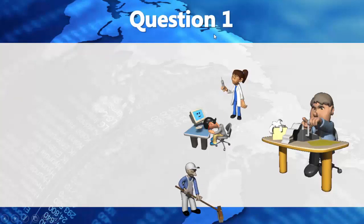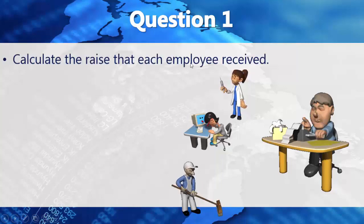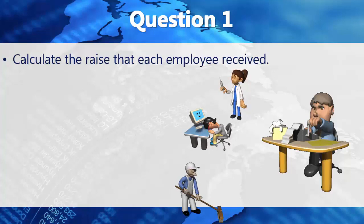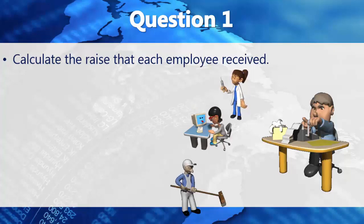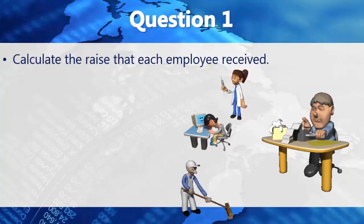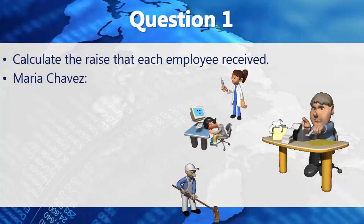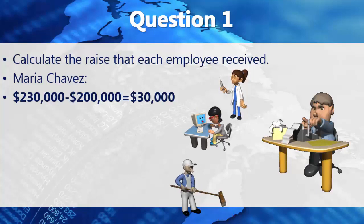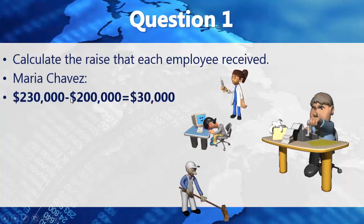Now we want to answer a few questions about their salaries. To calculate the raise each employee received, we subtract their 2018 salary from their 2019 salary. For Maria Chavez, we subtract her 2018 salary from her 2019 salary and get a difference of $30,000.